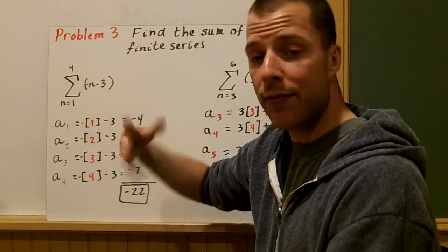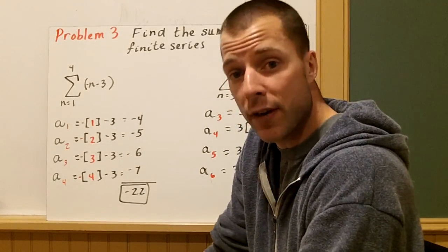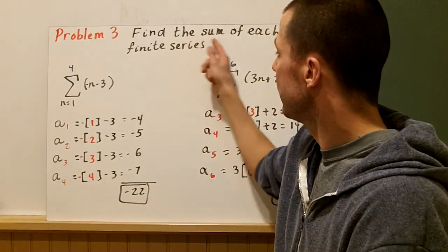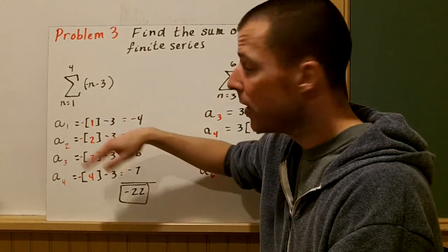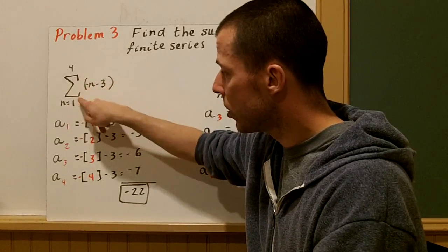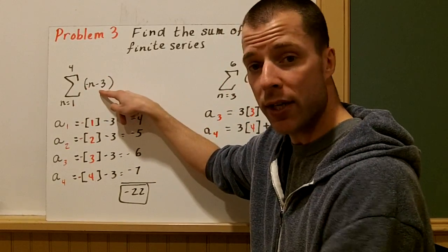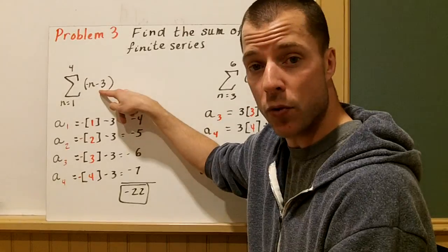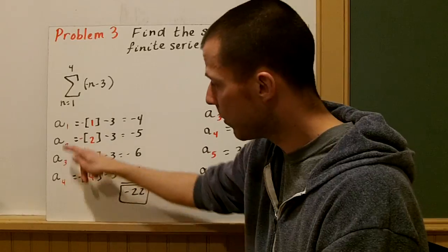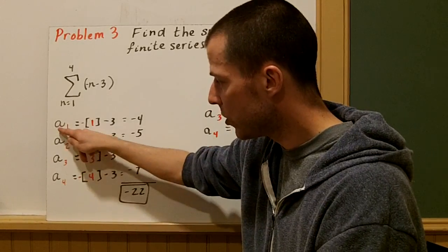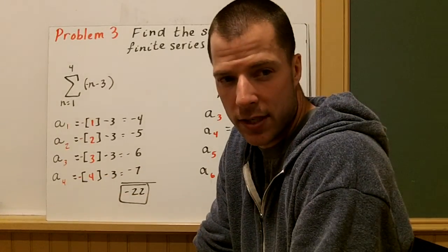In problem number 3, I've given you the summation notation and I want you to use what you know to find the sum of each series. We're going to find the sum of each of these finite series. Finite because you have a start and end. So we have the summation from 1 to 4 and there's our rule. I need to know the sum of the first 4 terms. That's what this means. So we have a_1, 2, 3, 4. Term 1, term 2, term 3, term 4. I don't know what those terms of that series are.